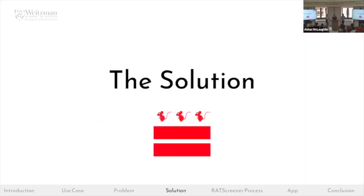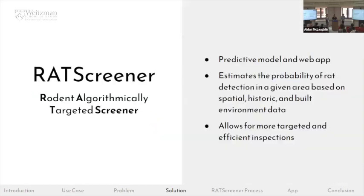The solution is Rat Screener — short for the Rodent Algorithmically Targeted Screener. It's a predictive model and web app that uses spatial, historic, and environmental data to estimate the probability of rat detection and allow for more targeted inspections.